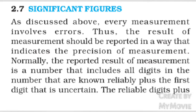Significant figures. As discussed above, every measurement involves errors. Thus, the result of measurement should be reported in a way that indicates the precision of the measurement. Normally, the reported result of measurement is a number that includes all digits that are known reliable plus the first digit that is uncertain.